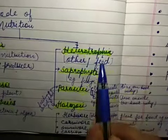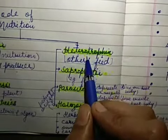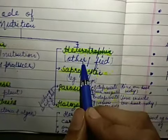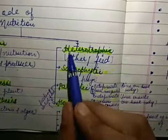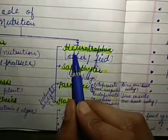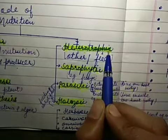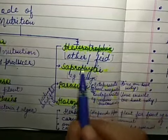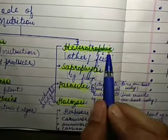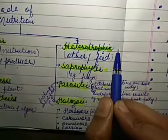Now see the heterotrophic mode of nutrition. What is the meaning of this term hetero? Hetero means other and trophic means feed or nutrition. It means the organism which cannot synthesize their food and depends on other organisms for their food or nutrition are called heterotrophs. And the mode of nutrition is called heterotrophic mode of nutrition.